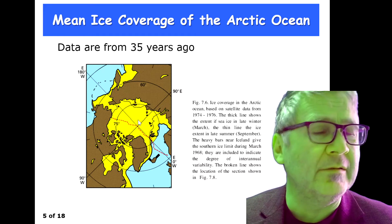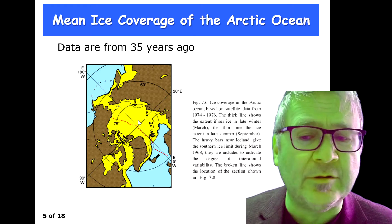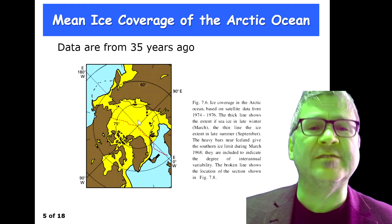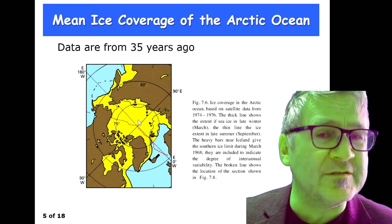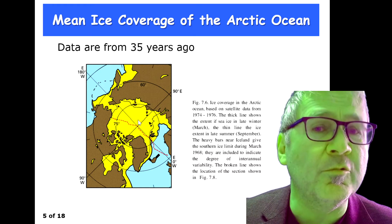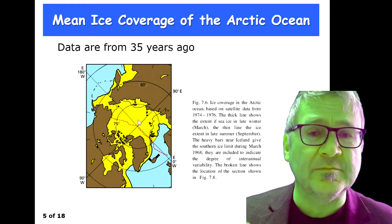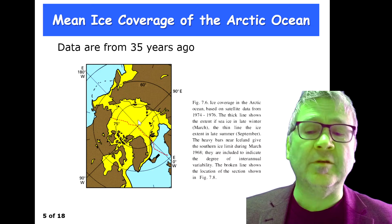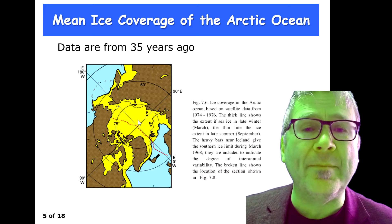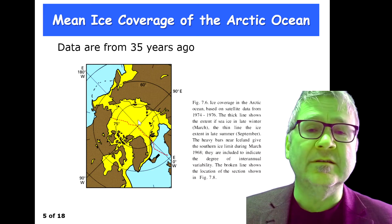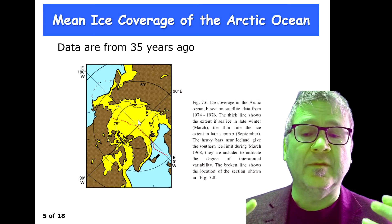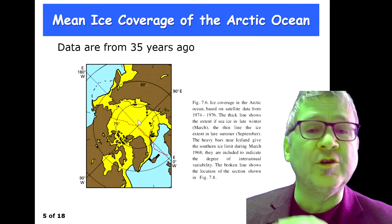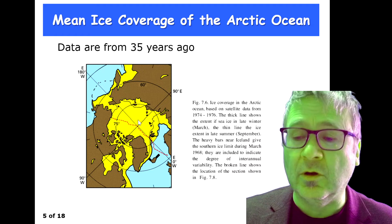A third role to add: sea ice also provides a transport path for some marine species — like polar bears, because they can walk on it.